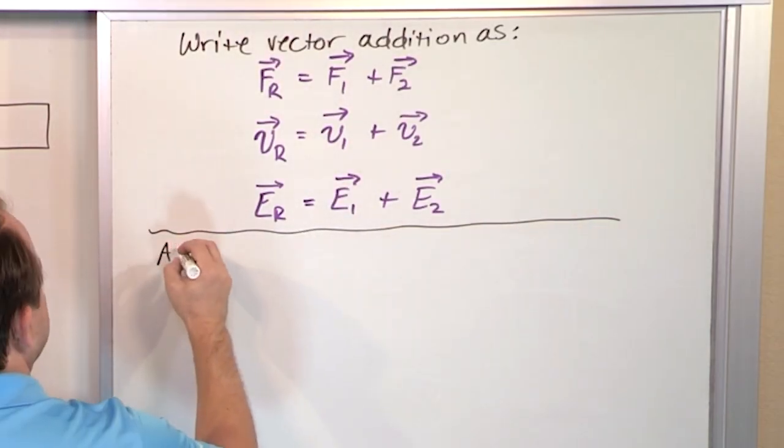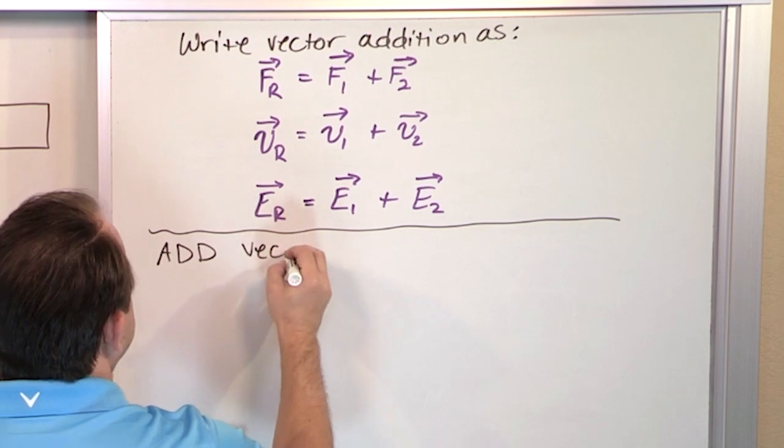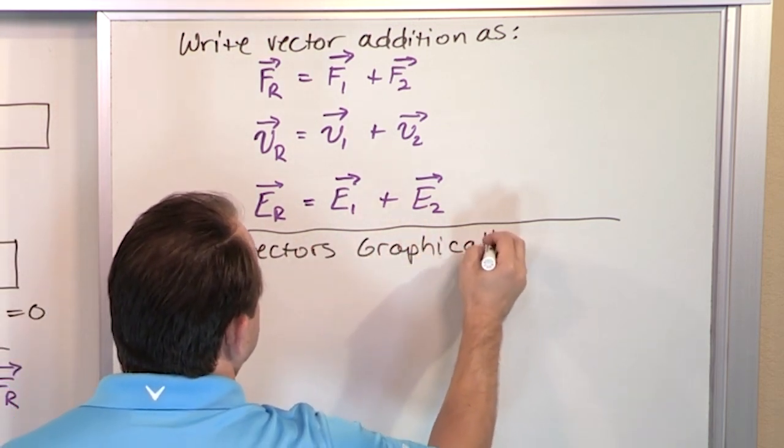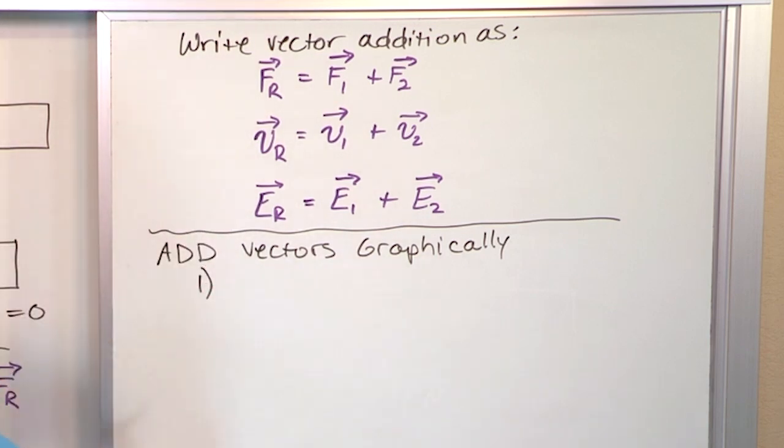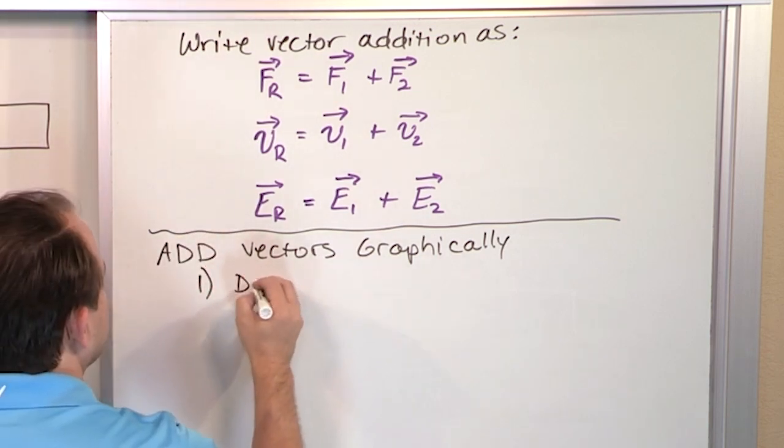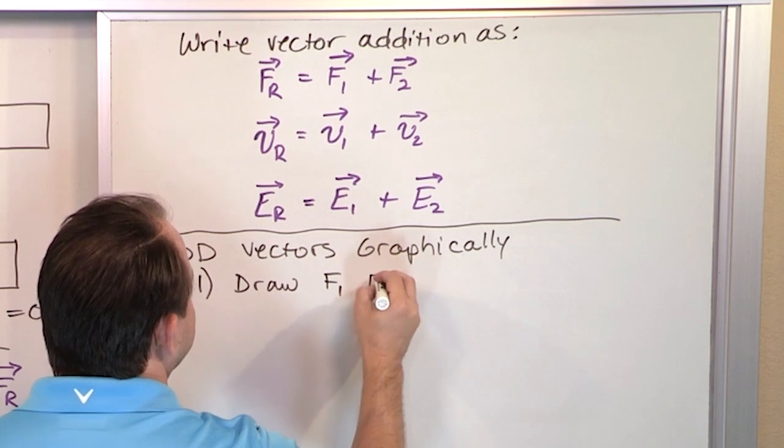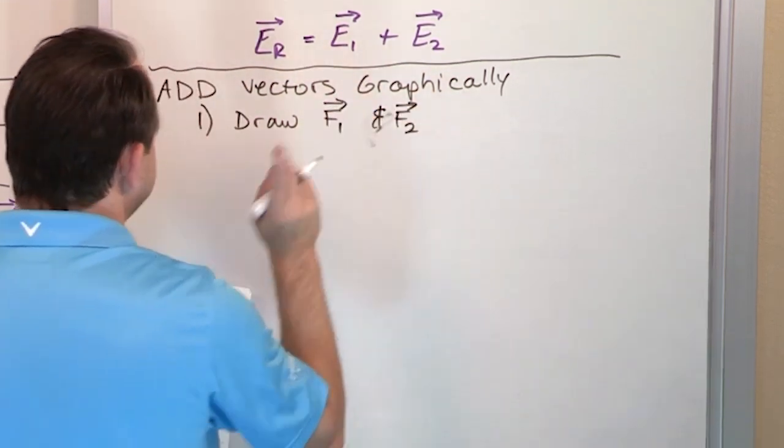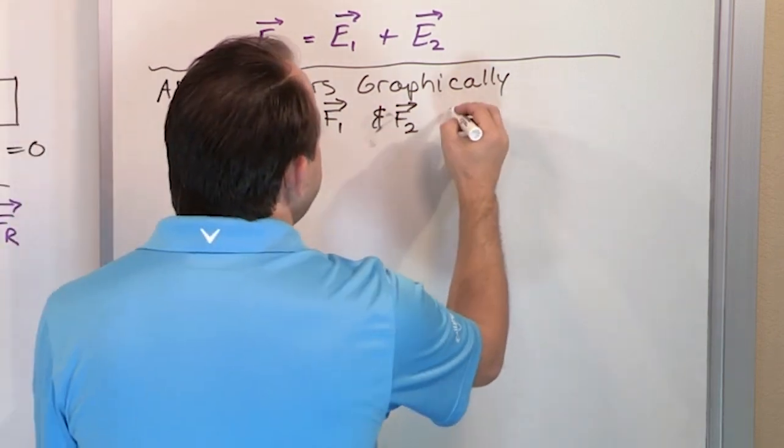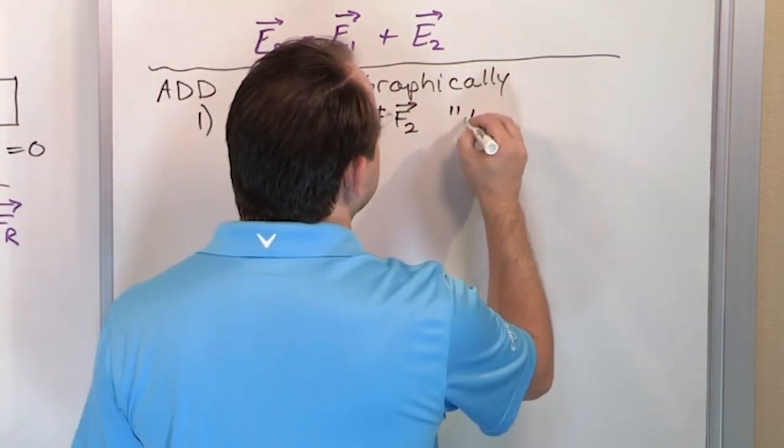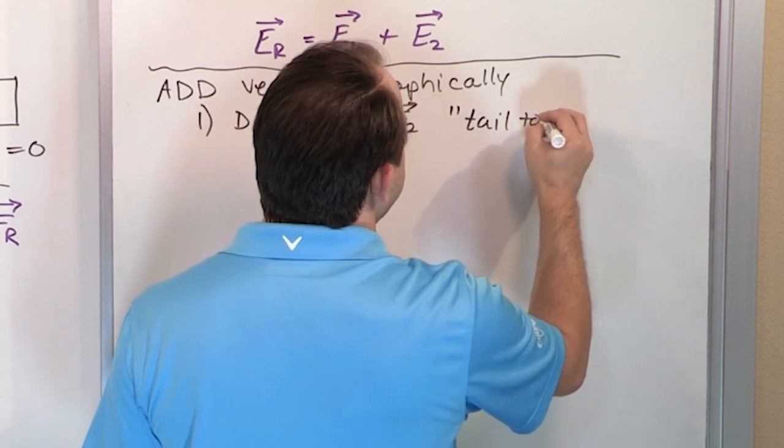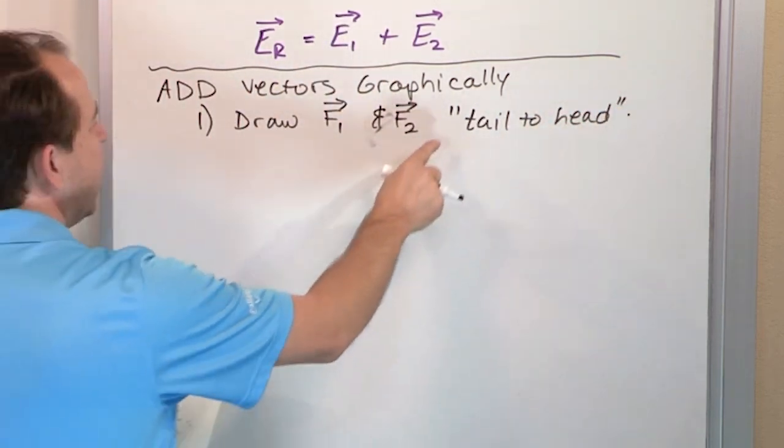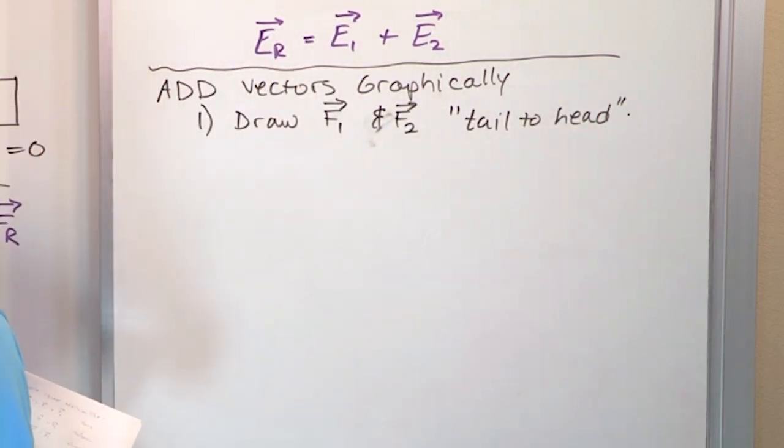So how to add, a general recipe for adding vectors graphically. Step one. You draw the two different vectors, F1 and F2. Got to put my little vector arrows if I remember. F1 and F2. And you draw them in a certain way. You align them up tail to head. I'm going to show you what that means. Don't worry about it. All I'm going to do is arrange the arrows tail of one arrow to the head of the other arrow.